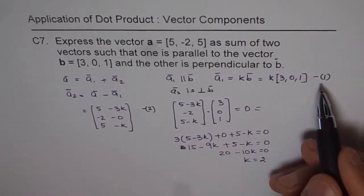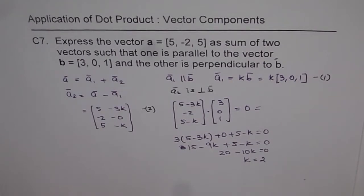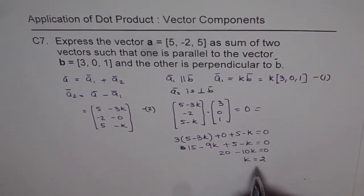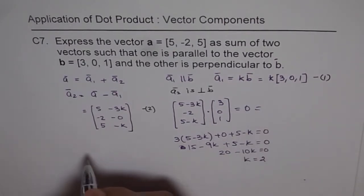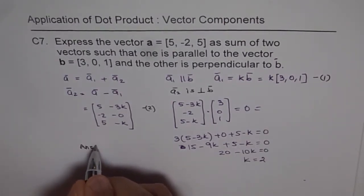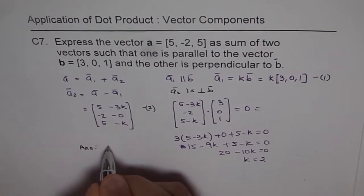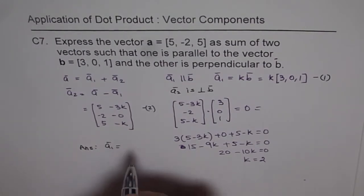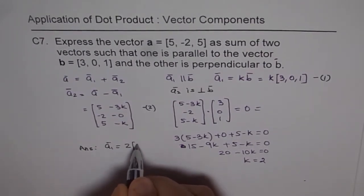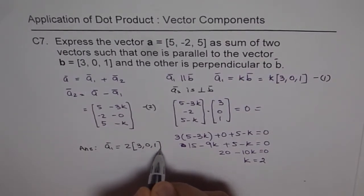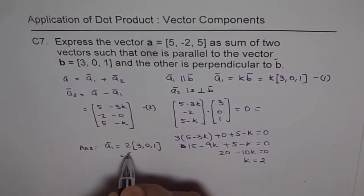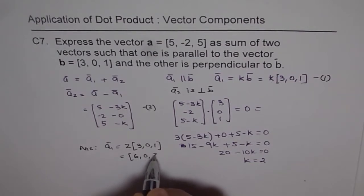Now, from equation 1 and 2, we know what vectors a₁ and a₂ are. So we can now write down, k is 2. So we have our answer right there, that vector a₁ is equal to 2 times [3, 0, 1], that means it is [6, 0, 2].